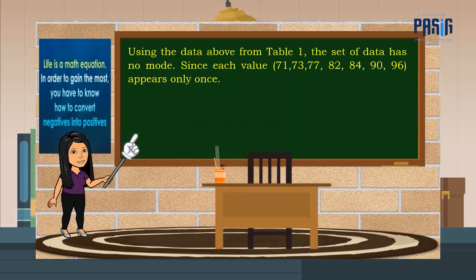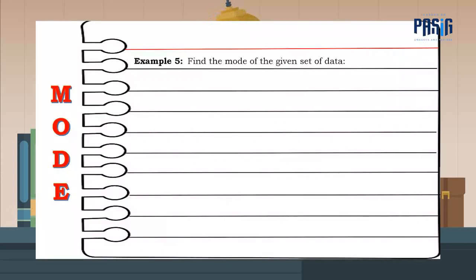Using the data above from table 1, the set of data has no mode since each value which are 71, 73, 77, 82, 84, 90, 96 appears only once. For example, find the mode of the given set of data. Correct! The mode is 5 because 5 appears most frequently. The data is said to be unimodal.